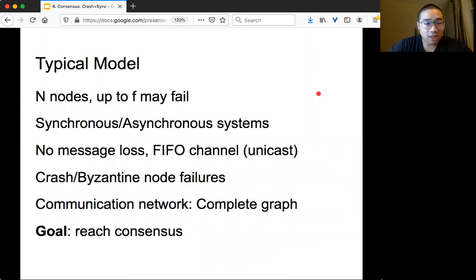Last time we talked about model, and the typical model in consensus area is that we have N nodes, and up to f of them may fail, and they may suffer like crash or Byzantine failure. We have a typical synchronous system assumption, and we assume that the unicast is reliable, so we have a FIFO channel, no message loss, and then the communication network is a complete graph, meaning that any pair of nodes can communicate with each other. So the goal is to reach consensus.